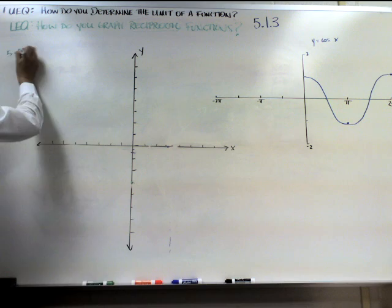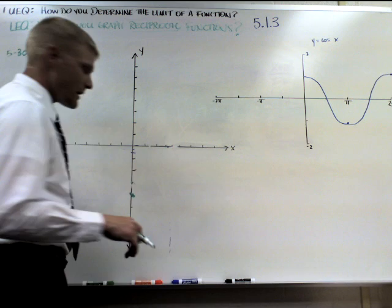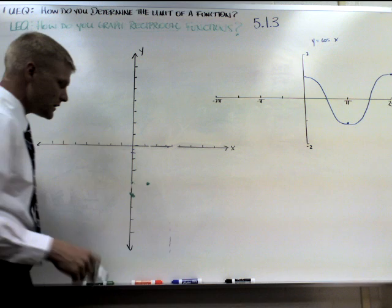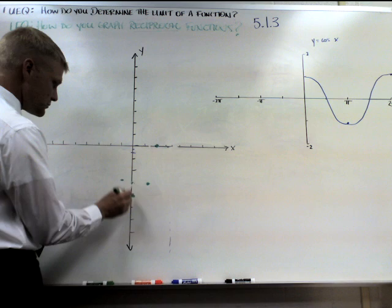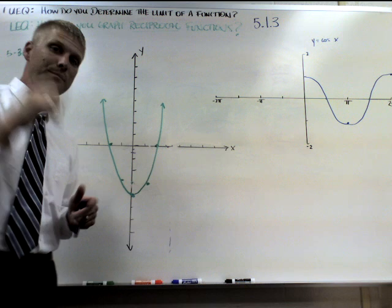5-30 is asking us to sketch the graph of x squared minus 4. That's a parabola with a downshift of 4. 1, 2, 3, 4, bam, vertex. If you forget how to sketch a parabola from algebra 2, over 1 up 1 is your first point because 1 squared is 1. Over 2 up 4 because 2 squared is 4. Same on the other side because it's what we call an even function. That will give us our parabola x squared minus 4.